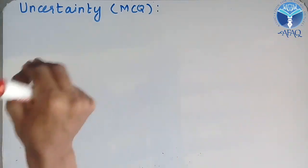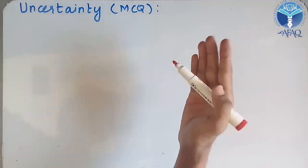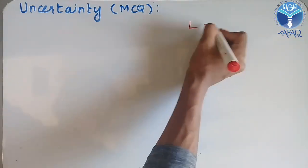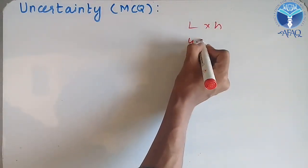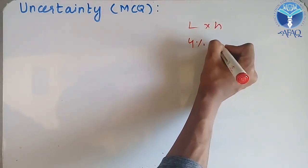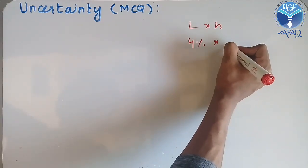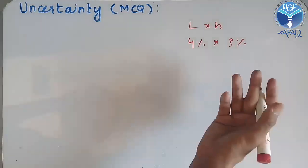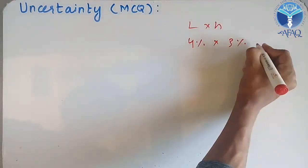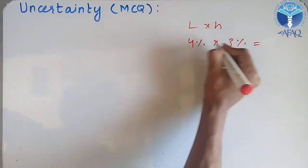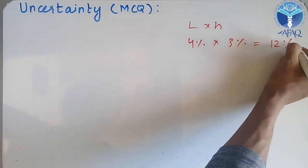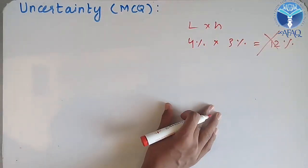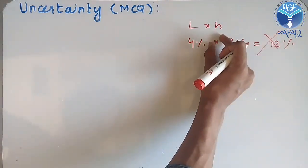For example, if someone says you have uncertainty in the length and the height, that is 4% in the length and 3% in the height, so what will be the percentage uncertainty? Most students think that is 3 multiplied by 4 equal to 12%, so that is a completely wrong option.